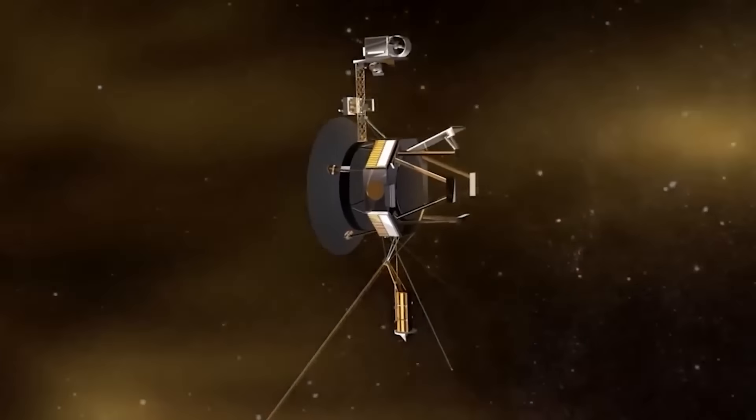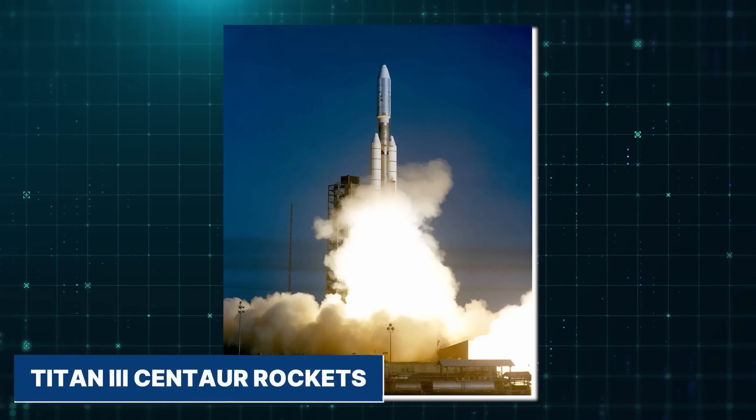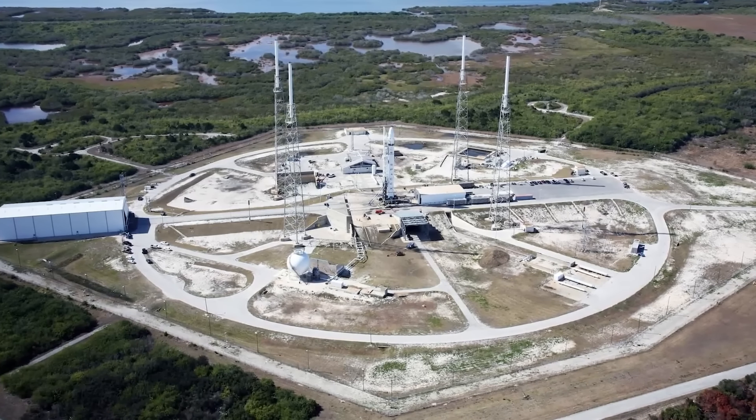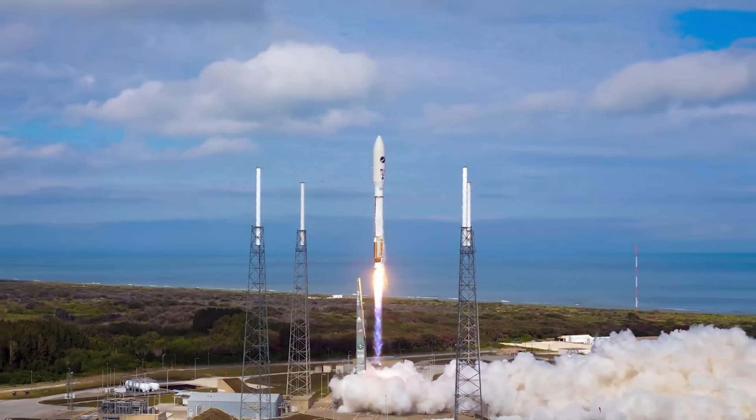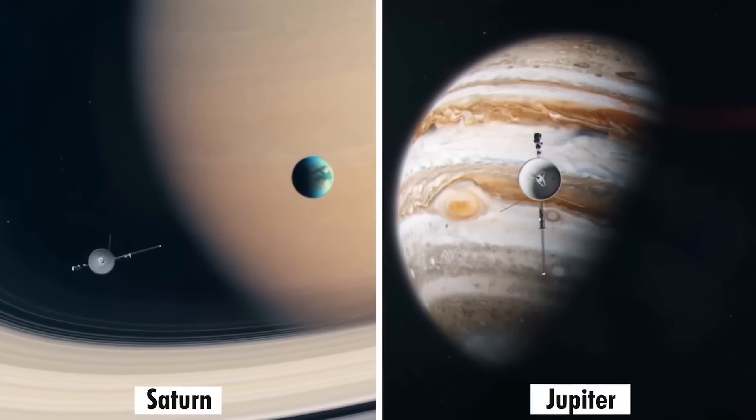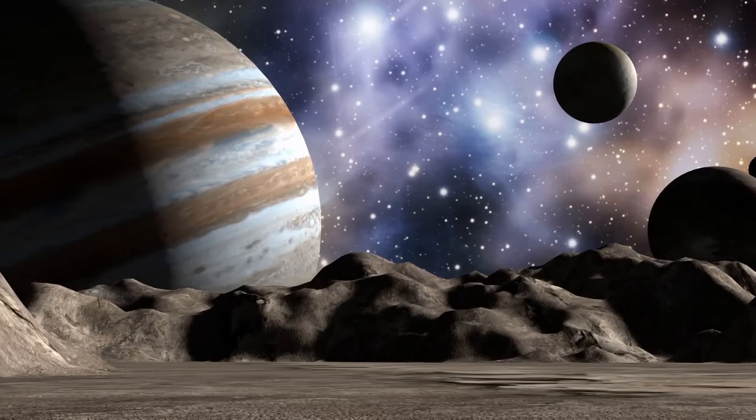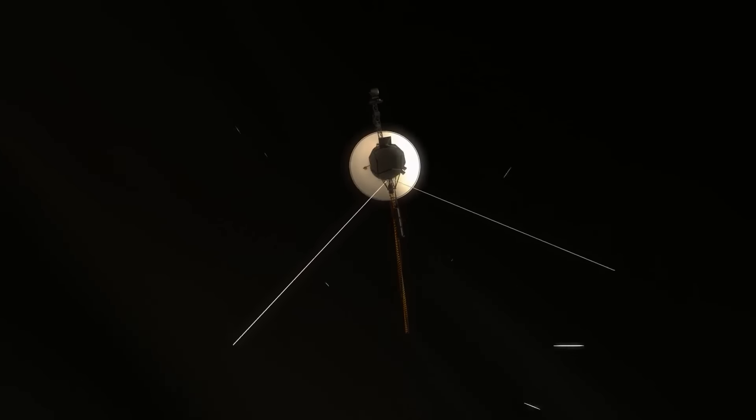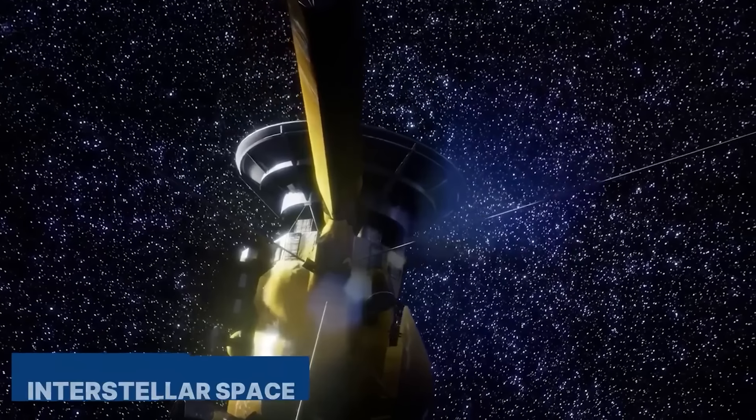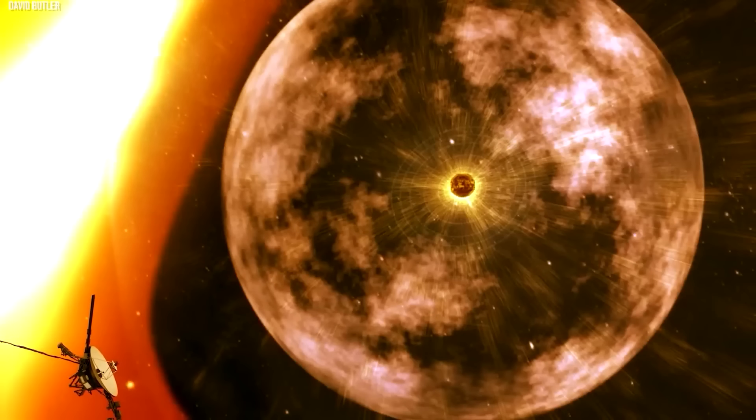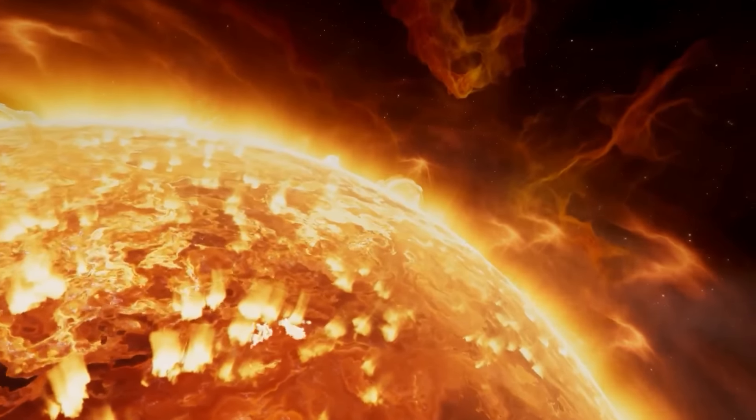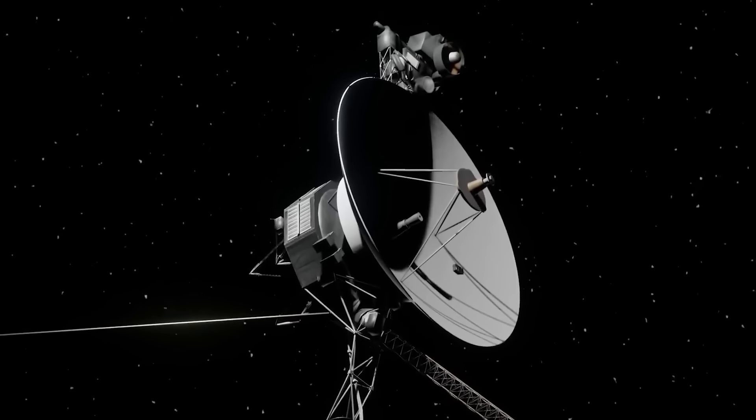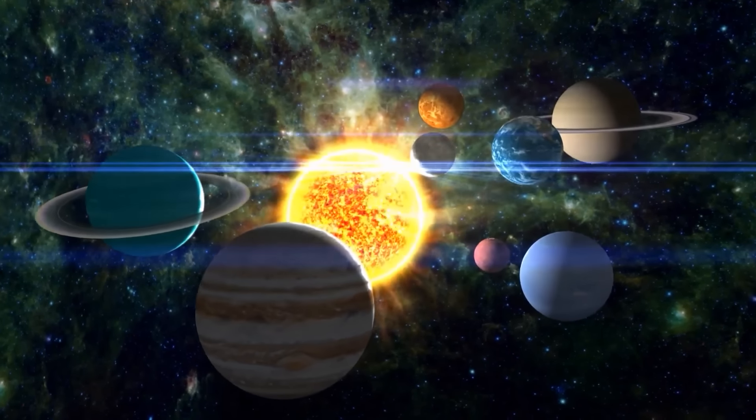Once the Voyagers were completed, they underwent rigorous testing to ensure their reliability. This included vibration testing to simulate the launch environment, and thermal testing to assess their ability to withstand extreme temperatures. The Voyagers were launched on Titan III Centaur rockets from Cape Canaveral Air Force Station in Florida. After their launch, the spacecraft followed a carefully planned trajectory that allowed them to encounter Jupiter and Saturn. After their planetary flybys, the Voyagers continued their journey into interstellar space. They are now exploring the Heliosphere, the outermost region of the Sun's influence. The spacecraft are expected to remain operational for many years to come, providing valuable information about the solar system and beyond.